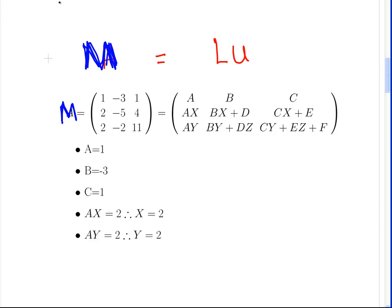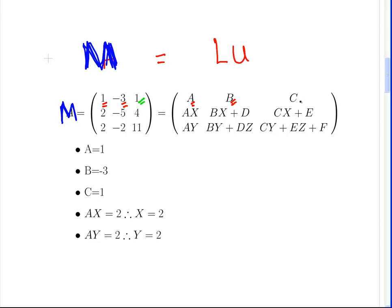So matching the cells: A is necessarily equal to 1, B is necessarily equal to minus 3, and C is equal to 1. Next, AX is equal to 2, and since A equals 1, X is equal to 2. AY is equal to 2, and since A equals 1, Y is equal to 2. Pretty straightforward operations.